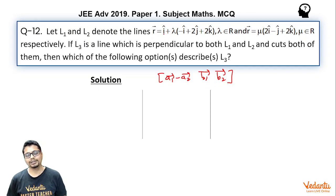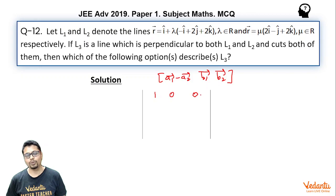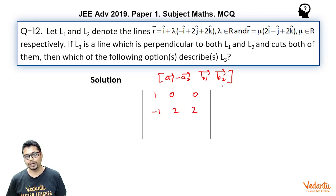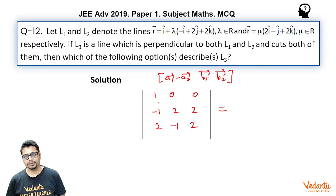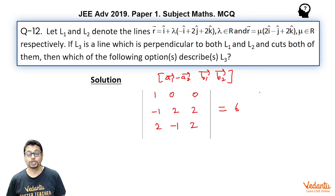Here a1 vector is the position vector of a point on L1, a2 vector is the position vector of a point on L2, b1 vector is parallel to L1, and b2 vector is parallel to L2. So a1 vector is i-cap and a2 vector is the origin. Writing the box product as a determinant with these rows, the determinant turns out to be 6, which is non-zero. So these two lines are skew lines.